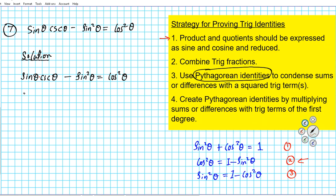The first factor is already in the form we desire, which is sine theta. Now can cosecant be written using sine and cosine? Absolutely. Using the reciprocal identity we can rewrite cosecant as one over sine theta. So we have sine theta times one over sine theta minus sine squared theta equals cosine squared theta. We have implemented the reciprocal identity.